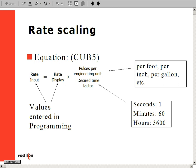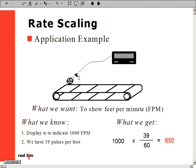Our example needs to display feet per minute of a process. Our fastest rated speed is 1000 feet per minute, and 39 pulses per foot are given off from our sensor. Our rate input then becomes 1000 times 39 over 60, or 650. We would then enter in the programming 1000 for a display and 650 for an input.